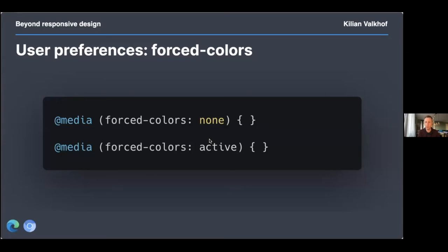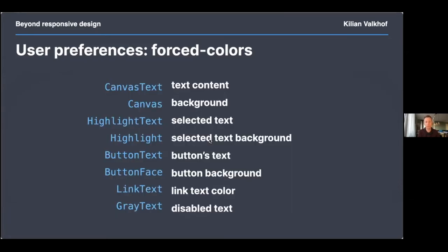If one of the themes has a black background, prefers-color-scheme: dark will also match, as browsers look at the background color a theme sets to determine whether it's light or dark. Because all colors have already been overwritten, there's not much for you to do except make sure SVG icons are still visible and where you used backgrounds to differentiate areas, you need to use borders instead — because all backgrounds will have been reverted to the same color, canvas, and any differentiation made with backgrounds is now gone.